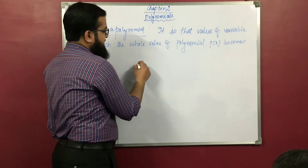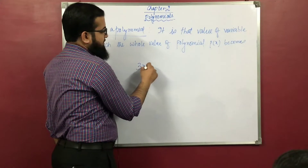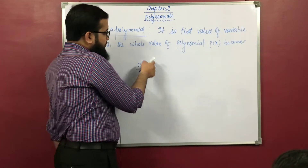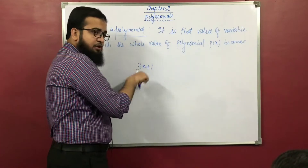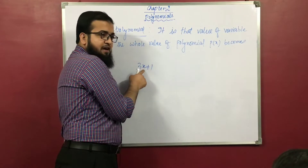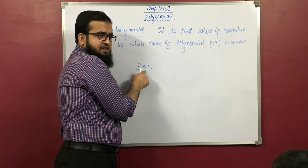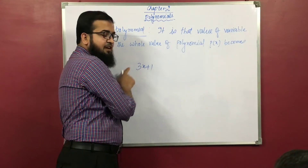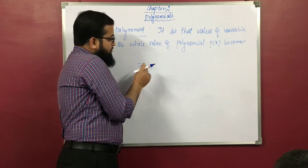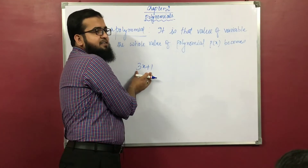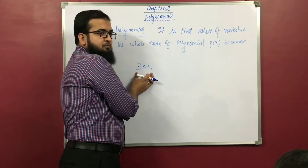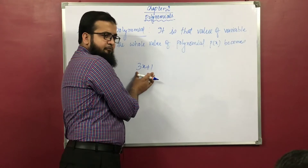Suppose we take the polynomial 3x plus 1. We need to find that value of x at which the whole polynomial becomes 0. So we need to find the value of x at which this expression equals 0.